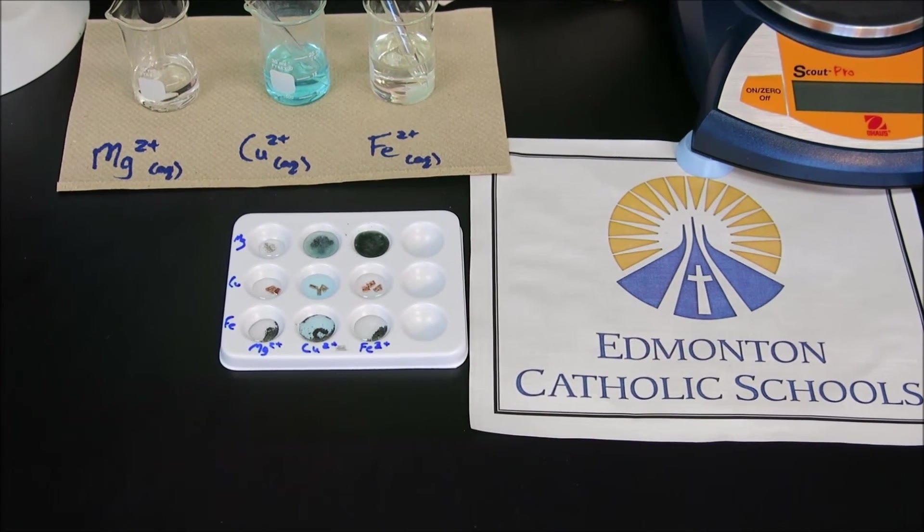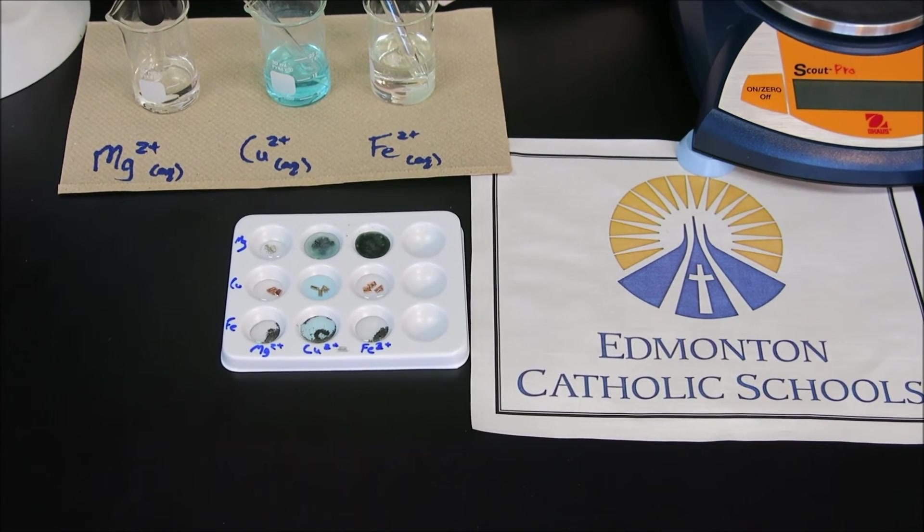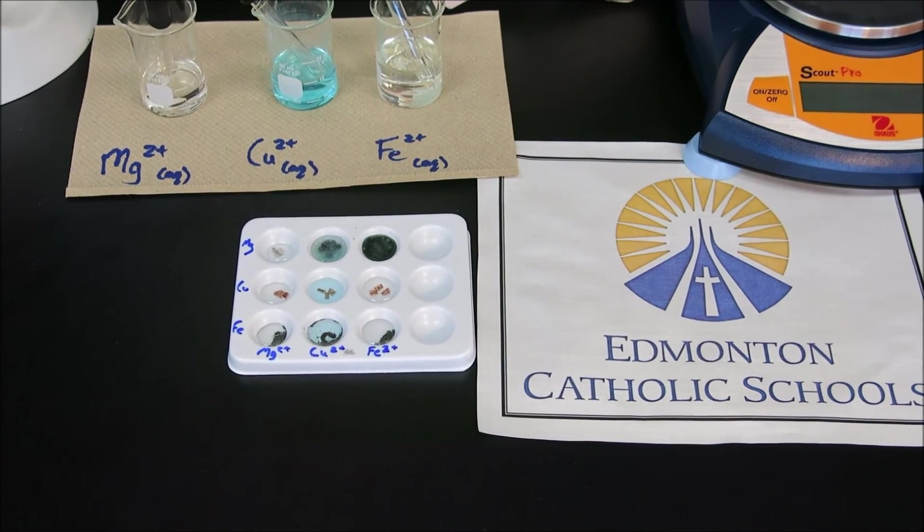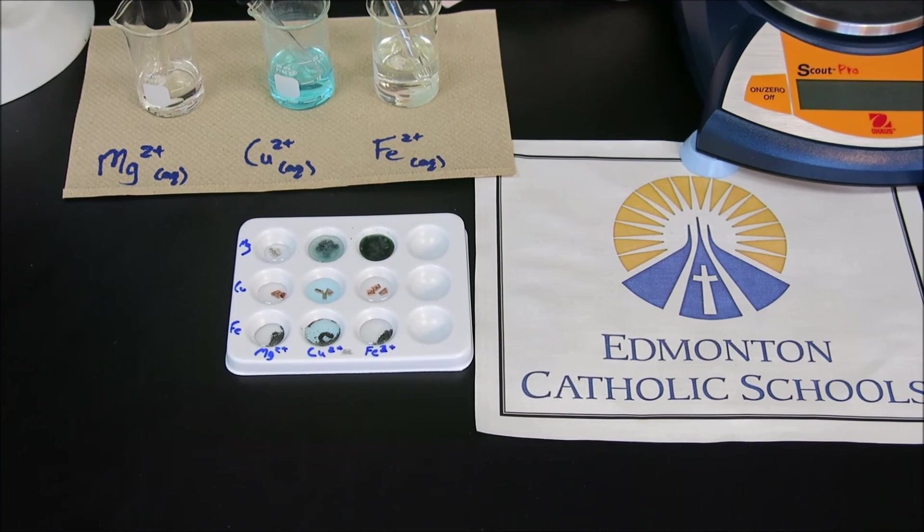Using these data, go ahead and build a reduction half-reaction table listing the strongest oxidizing agent on the top left and the strongest reducing agent on the bottom right.